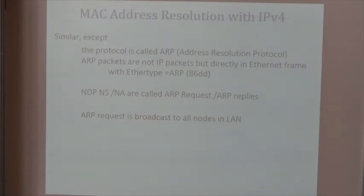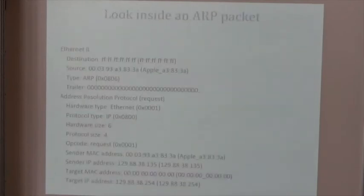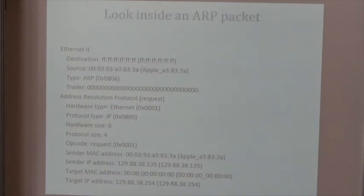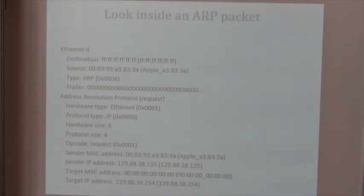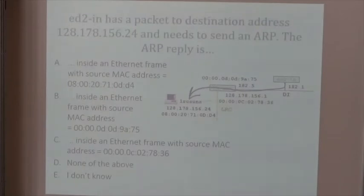Today, ARP is used only for IPv4, but that explains why, if we look at an ARP packet, we see an Ethernet header with type ARP. This is a bit ugly — if you would redo it today, you would do as with IPv6: put an ICMP packet inside an IPv4 packet. At the end of the day, it makes little difference.